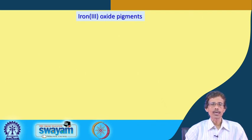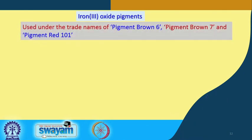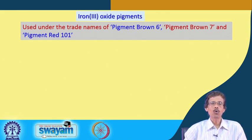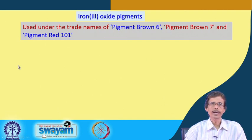We now move to iron(III) oxide pigments, which are not white but are categorized as red to brown pigments. Under trade names, they are known as Pigment Brown 6, Brown 7, or Red 101. These trade names do not specify whether the compound is based on Fe2O3 or other mixtures.